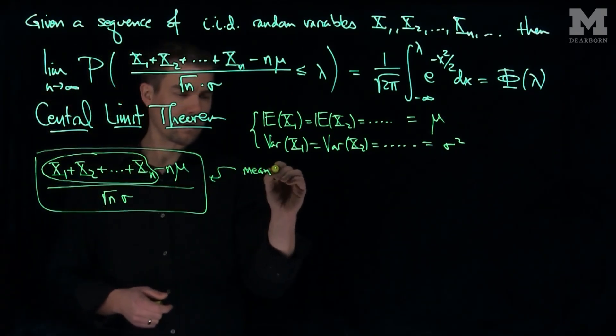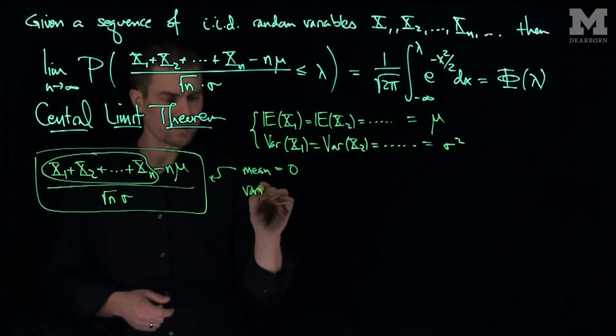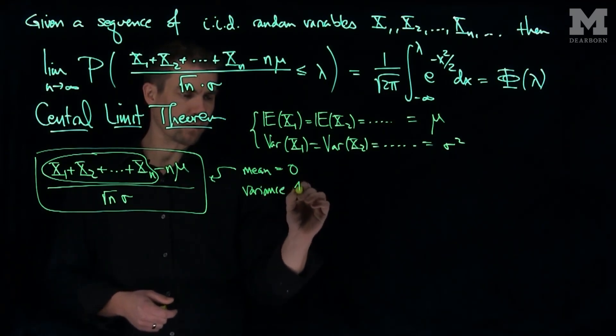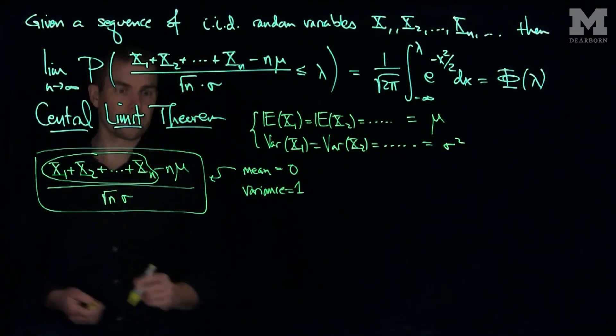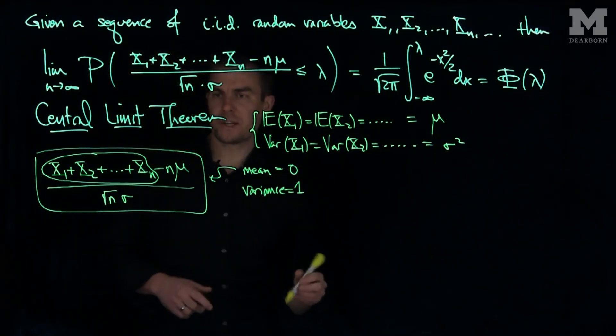Has mean equal to zero and variance equal to one, so we standardize the mean and variance of this ratio on top. And so what we see over here.